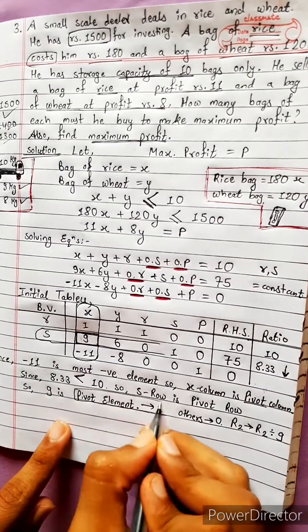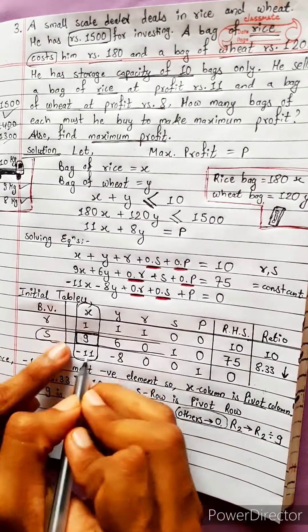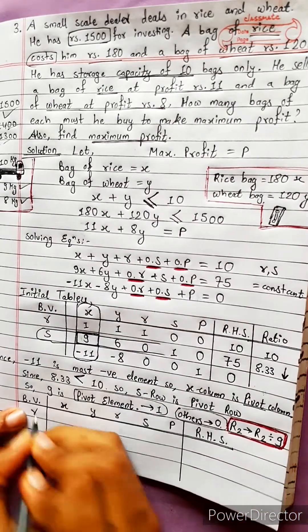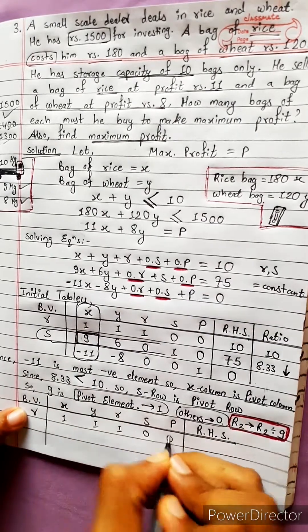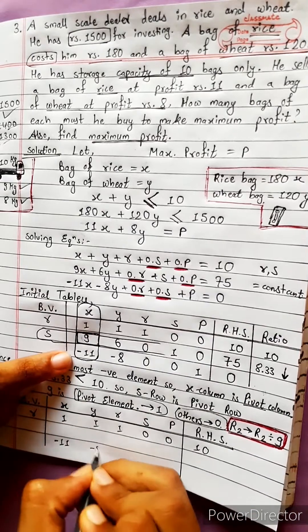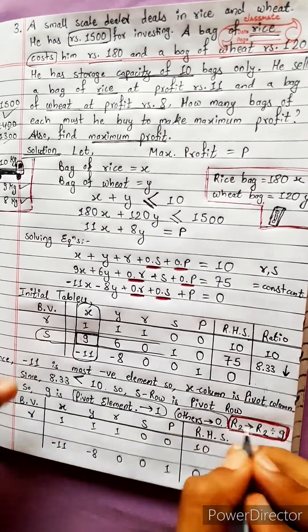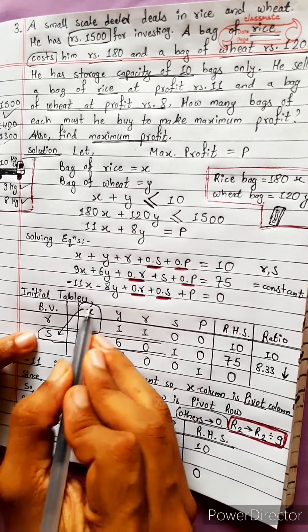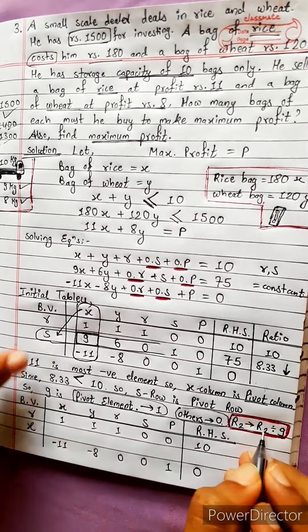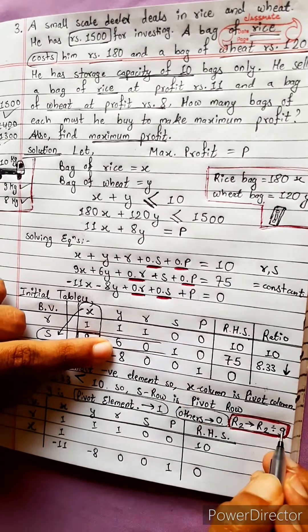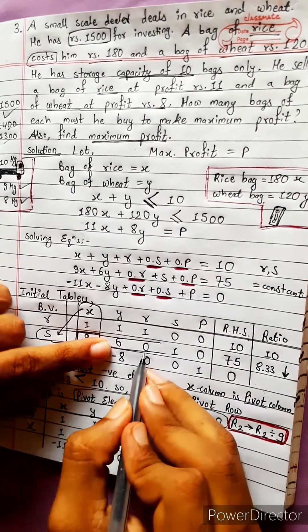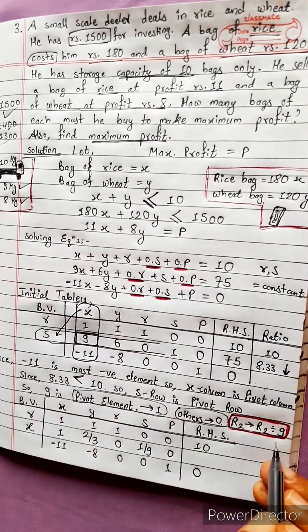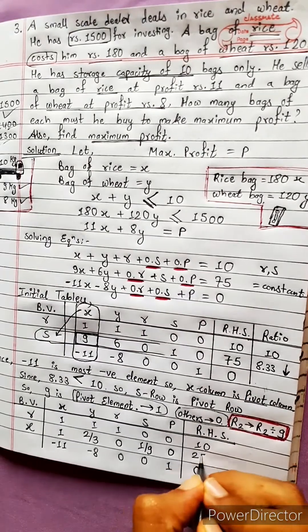R1 stays the same: 1, 1, 0, 1, 0, 10 and minus 11, minus 8, 0, 0, 1, 0. R2 changes into R2 divided by 9. x is transferred here — the pivot element is 9. So: 9/9=1, 6/9=2/3, 0/9=0, 1/9=1/9, 0/9=0, and 75/9=25/3.